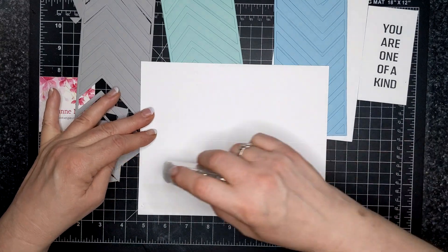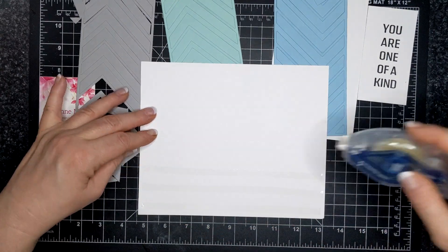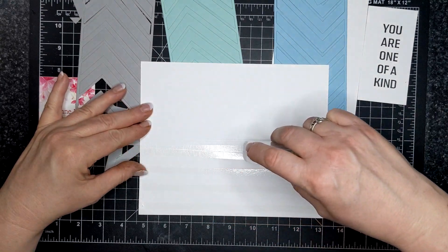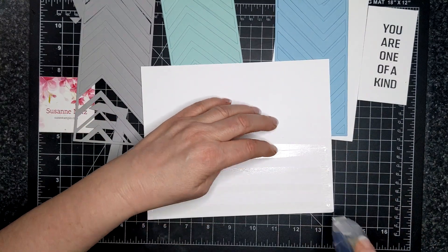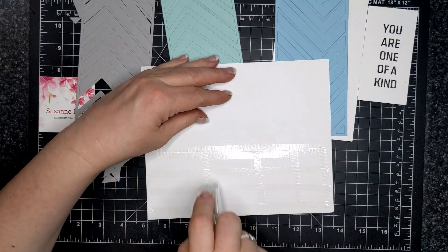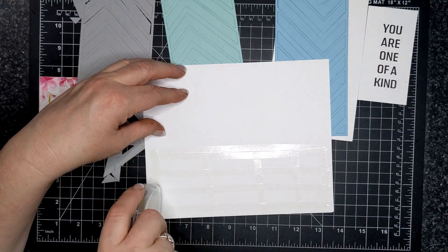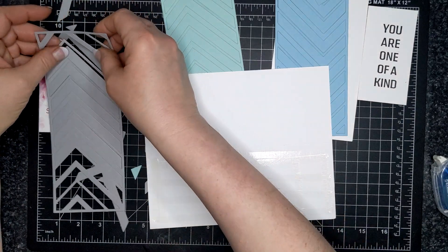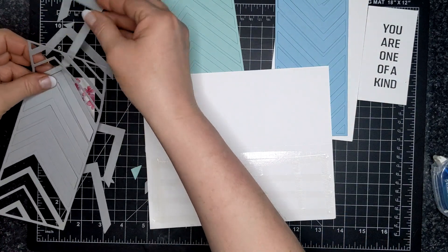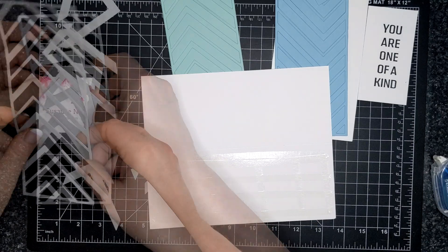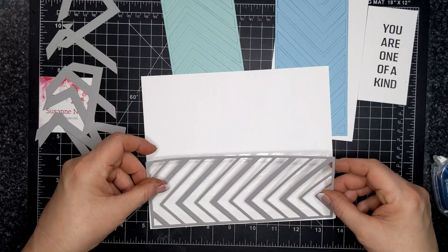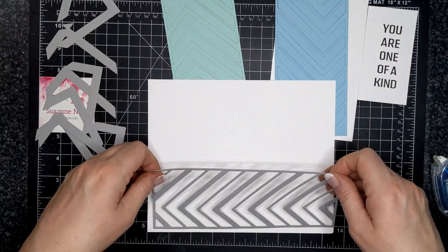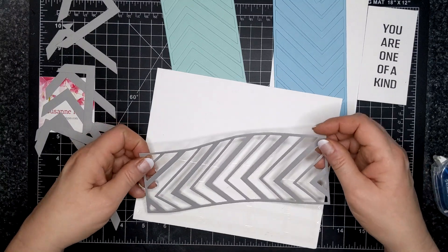So I am slathering the top portion of my slimline card base with my seal plus, my adhesive of choice. I'm leaving about a quarter of an inch around the card base so that I'm not going to have adhesive sticking out. So this is the smoky slate die cut and it is the positive die cut, not the negative. And I'm going to adhere this to my slimline card base.